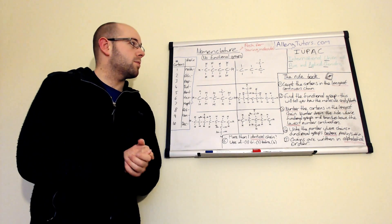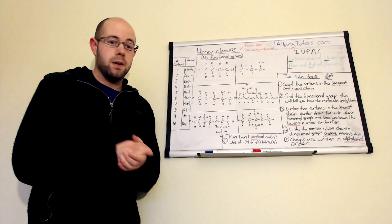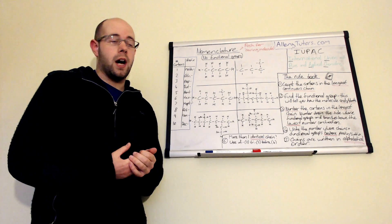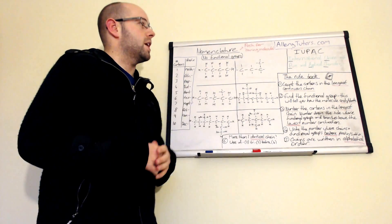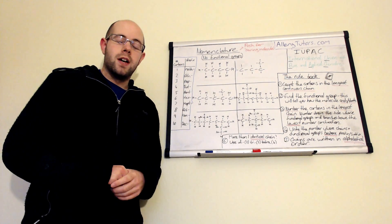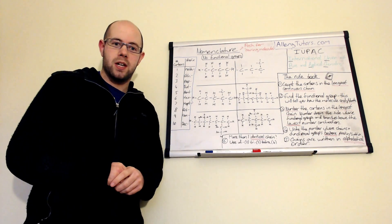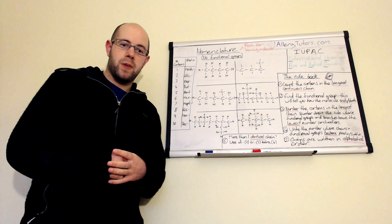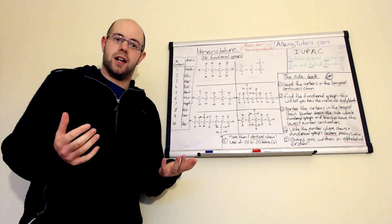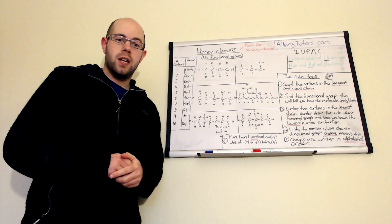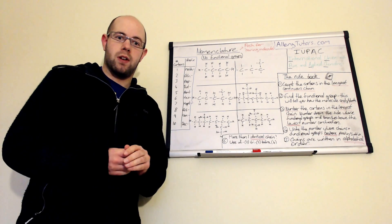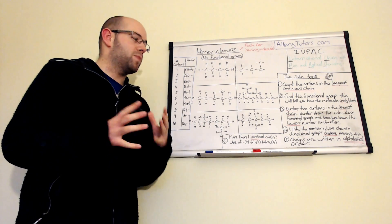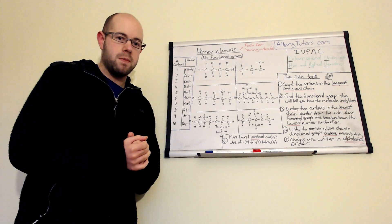We're going to start with what IUPAC means. You might see this on the exam - they might say 'give the IUPAC name of this molecule.' IUPAC stands for the International Union of Pure and Applied Chemistry. This is the body that governs how chemicals should be named. They come up with a set of rules - it basically means it's an international standard, so no matter where you go in the world the names of molecules are recognised globally. It's like a global rule book for chemistry.